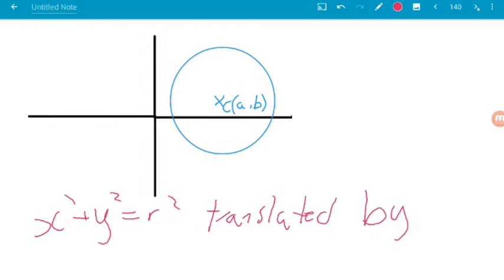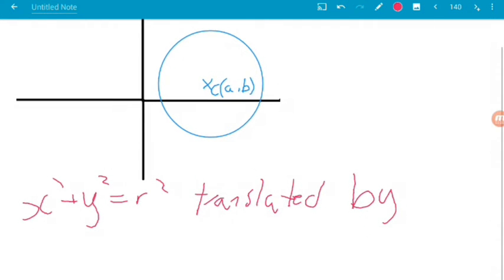Well, the vector is going to be, it's gone A to the right here and B up. So, the vector is going to be A, B. So, how do we describe that as an equation?